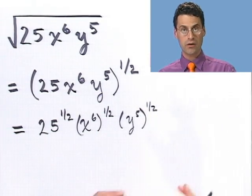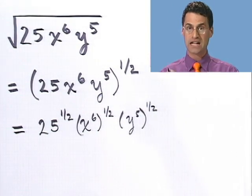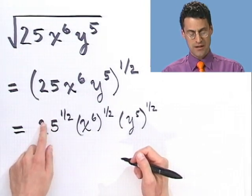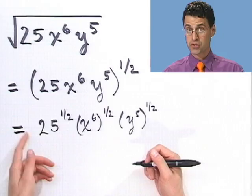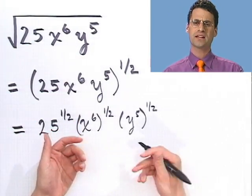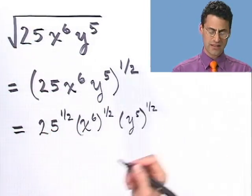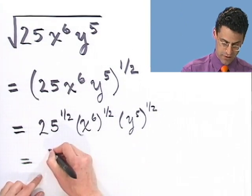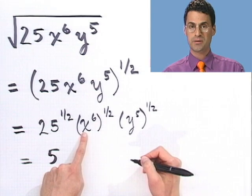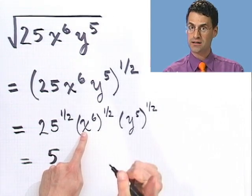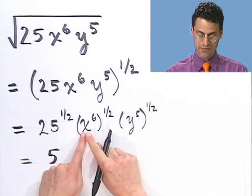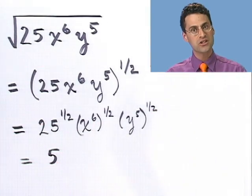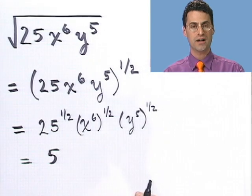Now I can think about these things individually — divide and conquer as much as possible. 25 to the 1/2 is the square root of 25, which is 5. For x to the sixth all to the 1/2, we use another rule of exponents: if you have something to a power and raise the whole thing to another power, you multiply the exponents.